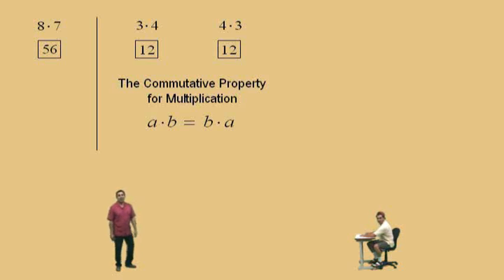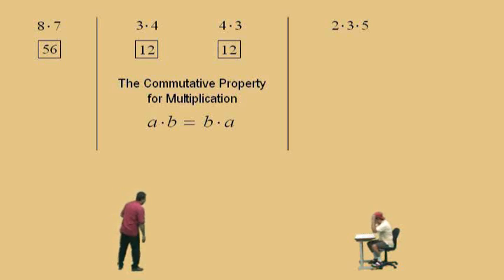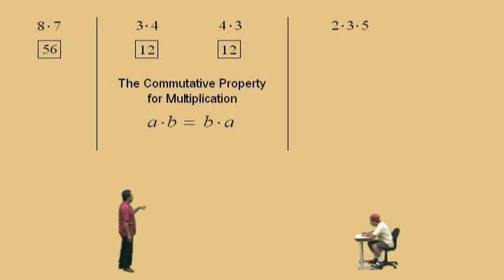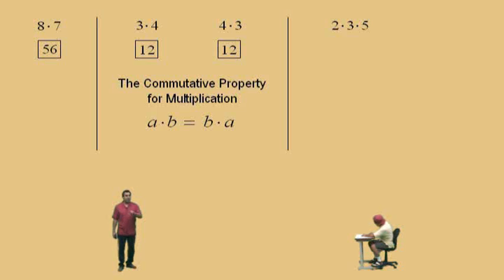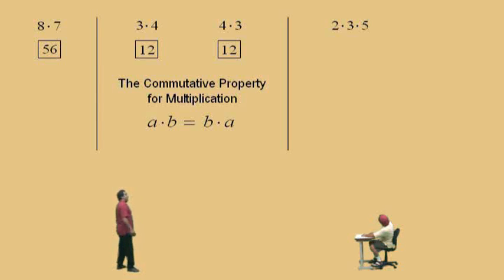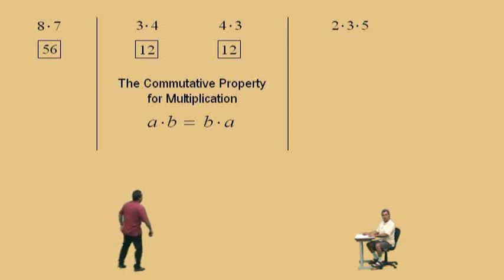That is the commutative property for multiplication, which states that A times B is equal to B times A. Now let's look at this problem over here: 2 times 3 times 5. We're going to work this problem left to right. Order of operations — that lecture is coming up very soon, covering multiplication, division, parentheses, exponents, addition, subtraction. But let's get through this lecture first.